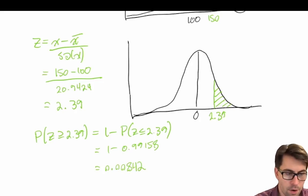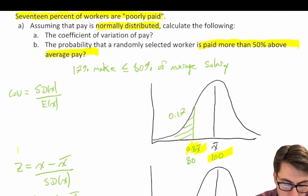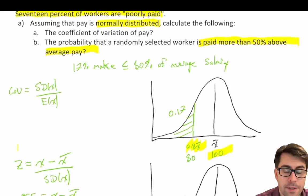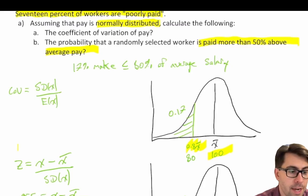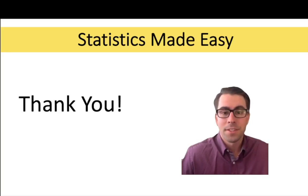In this question we've used the properties of the normal distribution to unlock our answers. We used the approach of assuming an expected value when given partial information, and applied the properties of the normal distribution to answer the associated questions. If you found this helped make statistics easy, consider giving the video a like and subscribing to the channel. I look forward to solving many more problems with you next time.